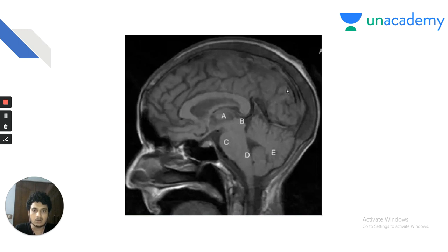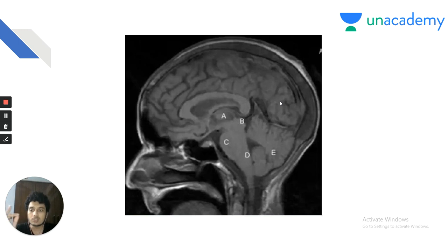Coming to our question: a patient with Hodgkin's lymphoma on ABVD regimen developed severe vomiting — what is the site of the brain involved? Just knowing Hodgkin's lymphoma and ABVD and vomiting is not enough. You must identify the site of the brain involved. We all know it is the area postrema or the chemoreceptor trigger zone which is responsible for vomiting.